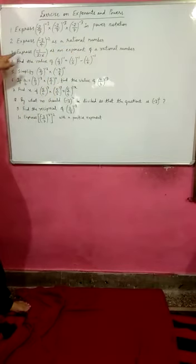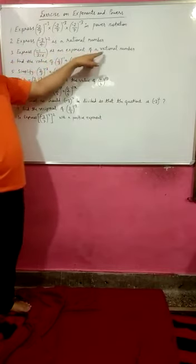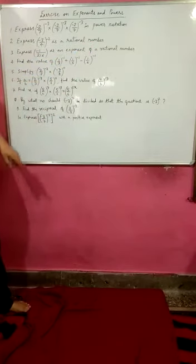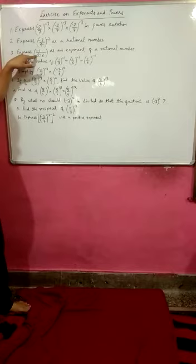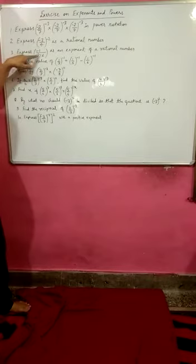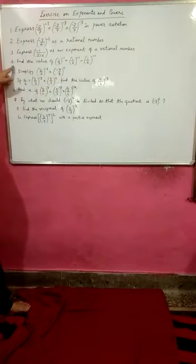Third question: express -1/216 as an exponent of a rational number. What you will do in this question is perform the prime factorization of the denominator 216, then see how many times the same value is getting multiplied, and then completely convert -1/216 as an exponent of a rational number.